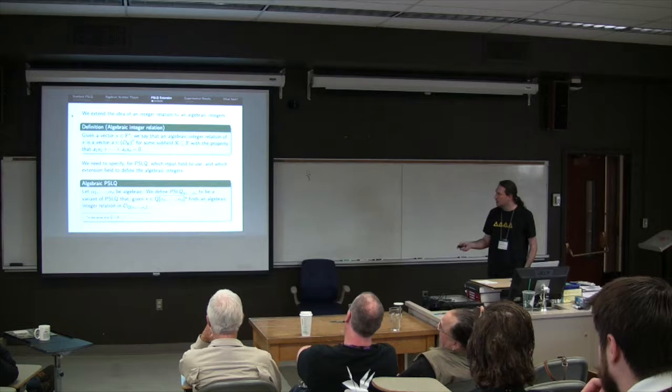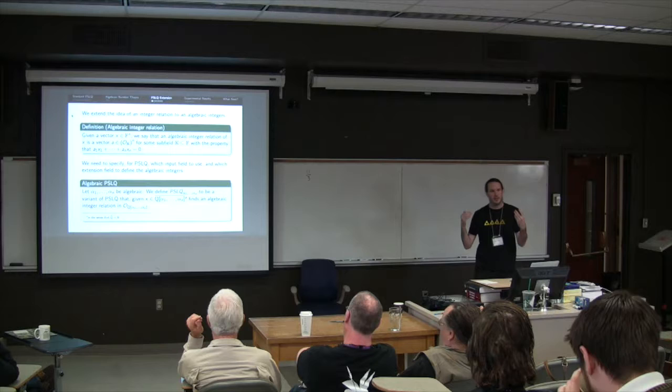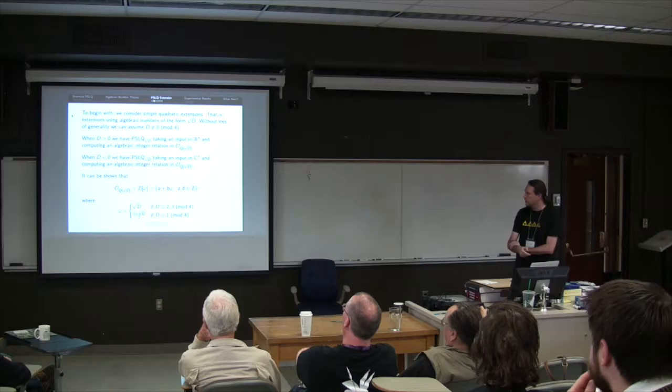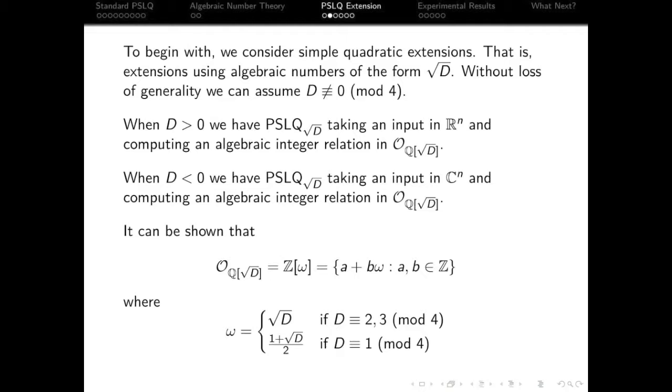So this is our basic idea for our extension. So we're going to basically pick a rational extension field, we're going to take its closure as the input, we're going to take its integers as the integer relation output. So there's an awful lot of algebraic extension fields. So to keep ourselves sane to begin with, we're only going to consider quadratic extensions. In fact, we're only going to consider simple quadratic extensions of the form Q adjoin root D.